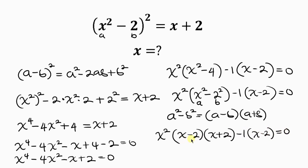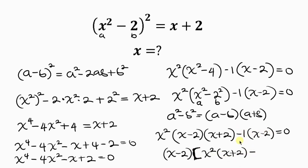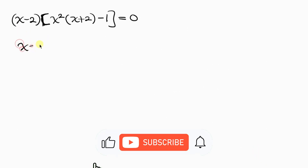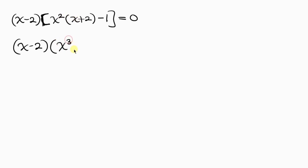Notice that (x - 2) is common, so we factor it out: (x - 2)[x²(x + 2) - 1] = 0. Expanding the bracket: x² times x = x³, plus x² times 2 = 2x², then minus 1. So we have (x - 2)(x³ + 2x² - 1) = 0.